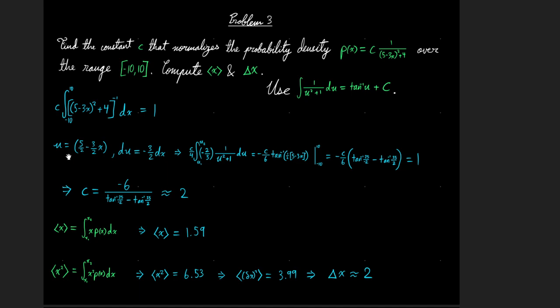So doing that, you can set u equal to five over two minus three over two times x, find the du. And you can plug this in, and you get, have this still set equal to one. And you find that the constant is about equal to two.